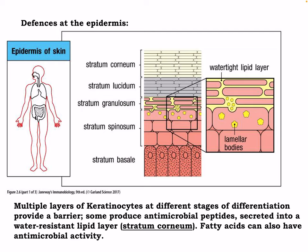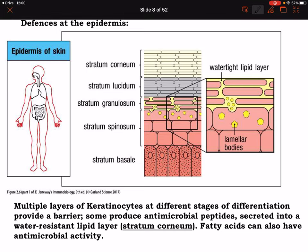Looking at the skin, here we see our skin layers. In the stratum granulosum, there is a water-type lipid bilayer making it difficult for things to get through — which is why cutting the skin makes it easier for pathogens to enter. We also have lamellar bodies and other cells built into the skin. Multiple layers of keratinocytes at different stages of differentiation provide a barrier; some produce antimicrobial peptides secreted into a water-resistant lipid layer. The stratum corneum and fatty acids on the skin also have antimicrobial activity.